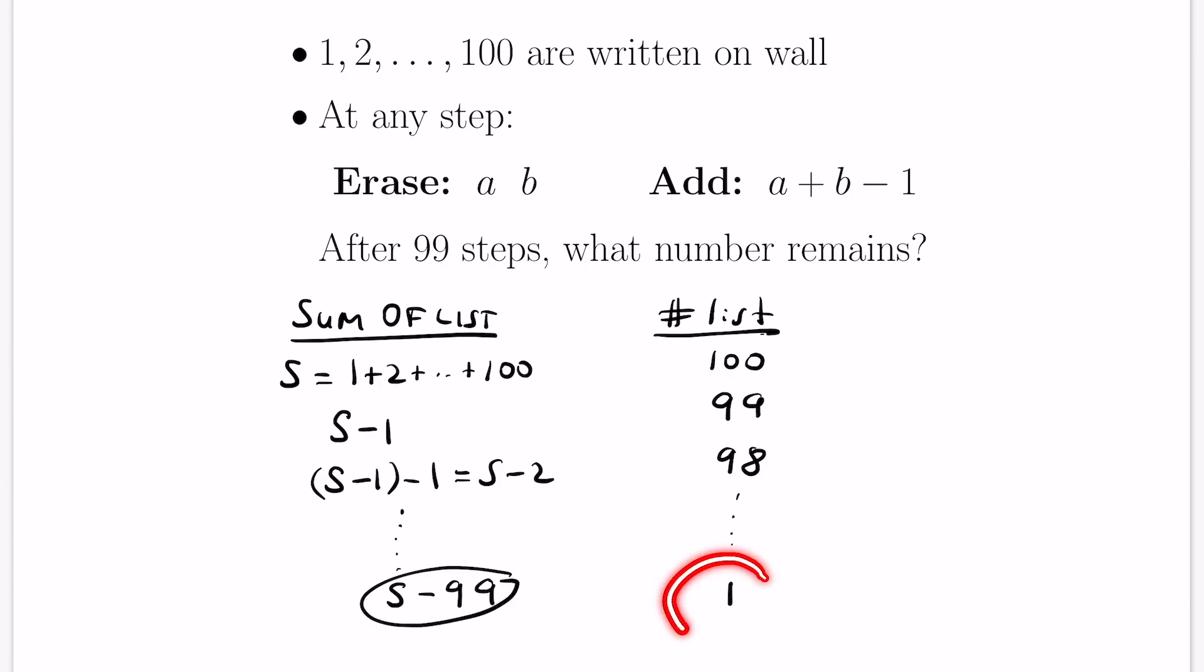But if we have one number left in the list, then that's the number that we end up with at the end. So that number must be S minus 99, which is this sum here, subtract 99, an actual definitive number that we can compute. In fact, this is the sum of numbers from 1 to 98, with 99 then released from this sum and adding 100. A cool way to figure out this process and figure out the number that remains by keeping track of one variable, in this case, the sum of the list.